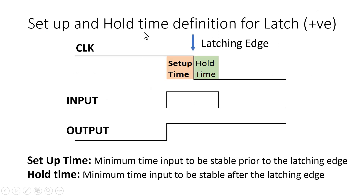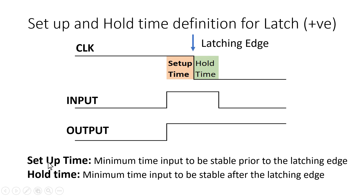Now let me define the setup and hold time of a latch. I have considered a positive level-sensitive latch. When there is a transition on the clock signal from 1 to 0, it is called the latching edge, and whatever value of input is available at this point is going to be retained on the output during the time when clock is zero. But there is a criteria the input must fulfill — it must follow the setup and hold time requirement of a latch. That means this input must be stable for some minimum time before the latching edge, which is called setup time.